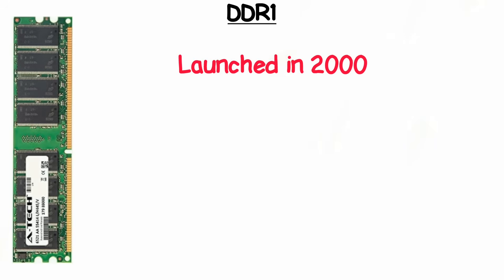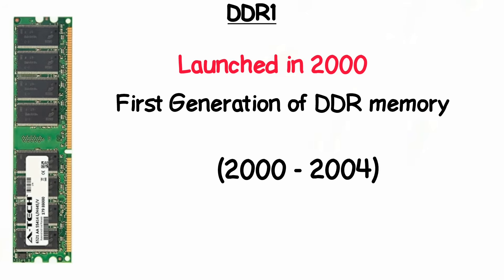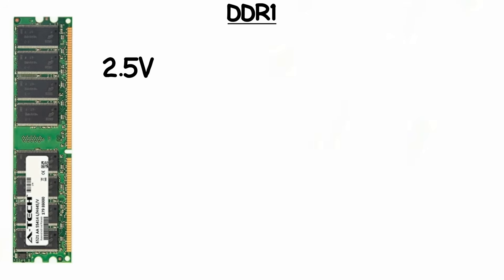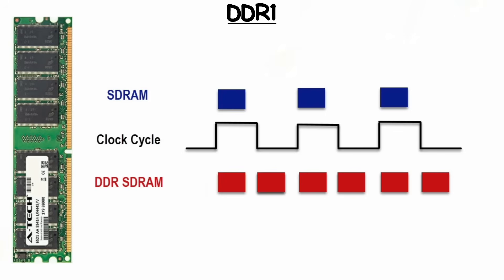DDR1 launched in 2000 and was the first generation of DDR memory used in PCs around 2000 to 2004. It operated at 2.5 volts and could be spotted by a single notch in the center of the stick. DDR1 modules typically maxed out at 1 gigabyte each, and doubled the data transfer rate compared to older SDRAM by sending data on both the rising and falling edges of the clock signal.